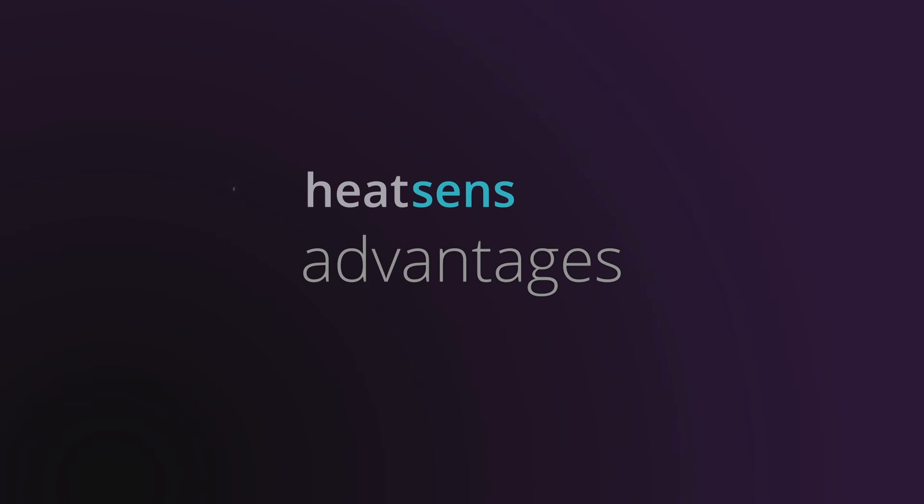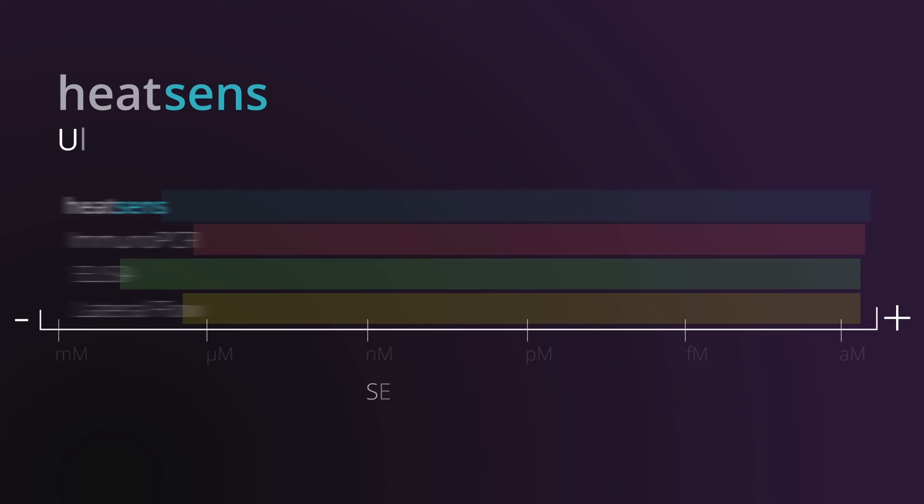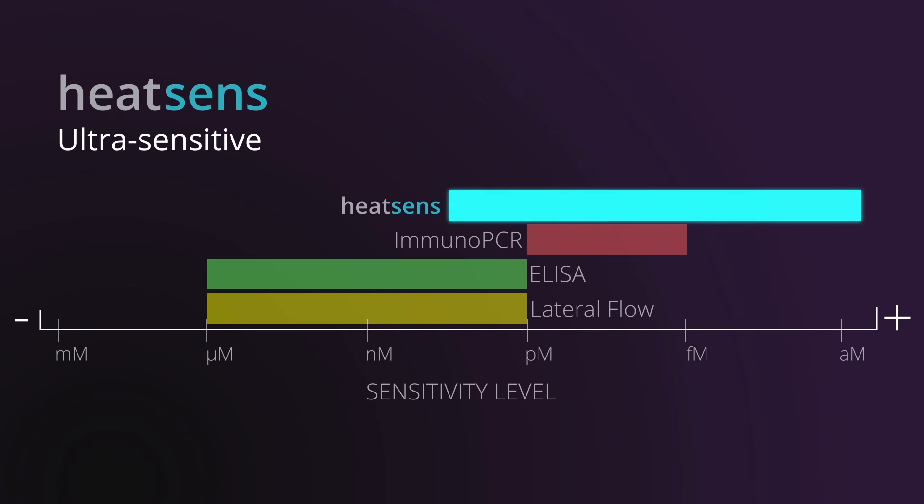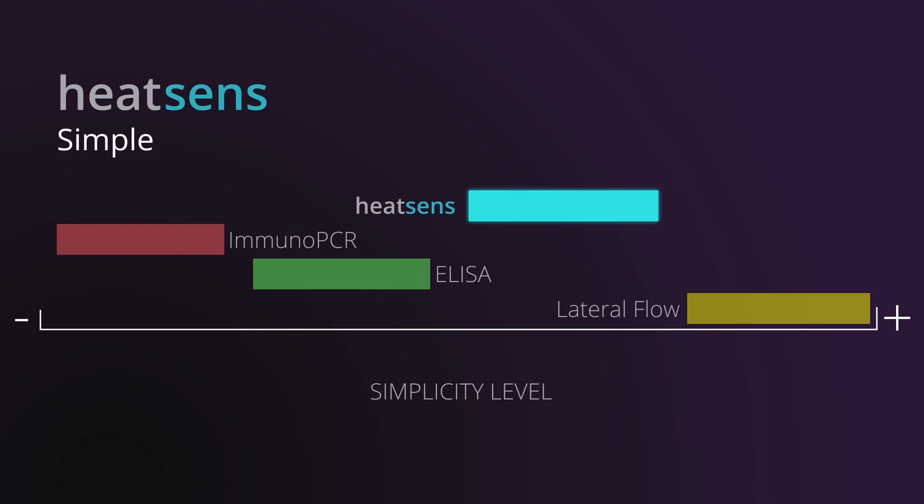HeatSense has very peculiar properties for the biosensing field. HeatSense is an ultra-sensitive technology that permits a direct use of complex matrix samples, which do not need complex pretreatments before the analysis, as it is for other sensing technologies. Additionally, HeatSense is easy to use, allowing simple detection.